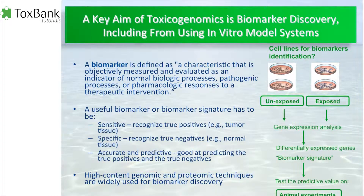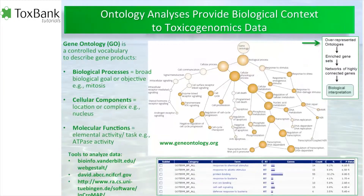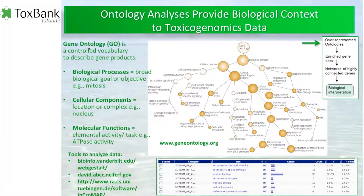Part of handling toxicogenomic data is dealing with the data and seeing whether there is relevance for the outcome in animals or humans. A very important part of understanding omics results is to process them against the gene ontology. The gene ontology is a vocabulary — a language to describe essentially what goes on in the cell.